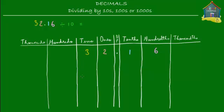So 32.16 divided by 10 — let's write each of these digits, 3, 2, 1, and 6, so it's easy to divide them by 10. What's another way of writing three tens? Well, three tens is the same as thirty ones. In the same way, two ones is equal to twenty tenths.